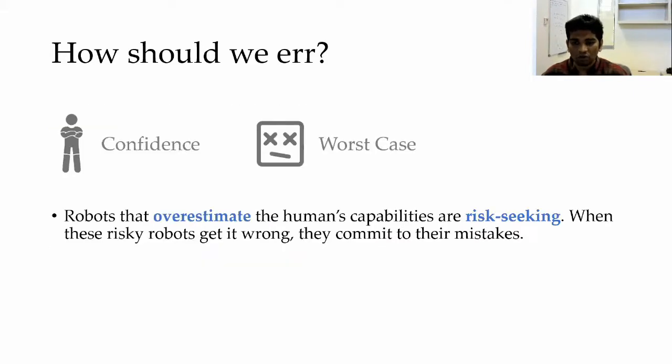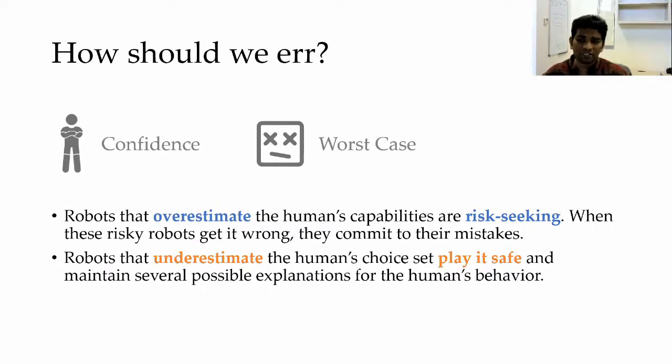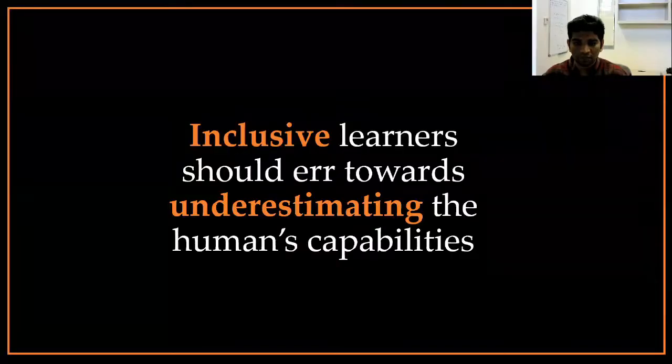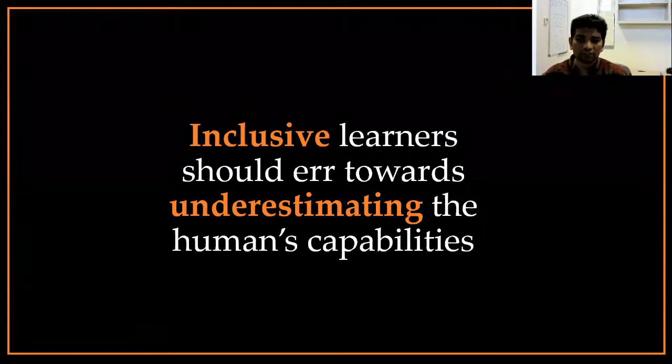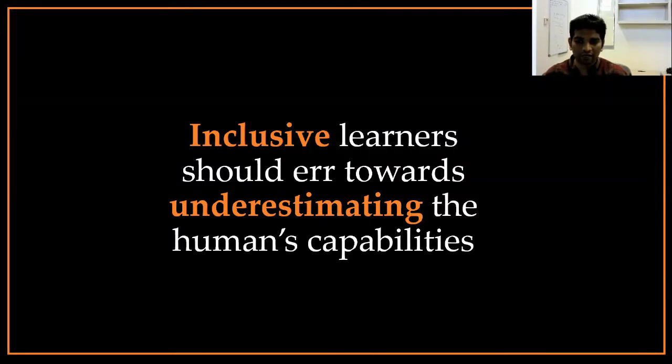All of what this means is that the robots that overestimate the human capabilities are risk-seeking. This means that they can quickly become overconfident in the reward they learned, even if it is wrong. Due to this risky nature, these robots, when they learn to spill coffee, will commit to it. Robots that underestimate the human's capabilities do the opposite. These robots are conservative and will try to maintain several possible explanations for the demonstrations they see. From our theoretical analysis, what we observed was that robots need to underestimate the human's capabilities to be inclusive learners.